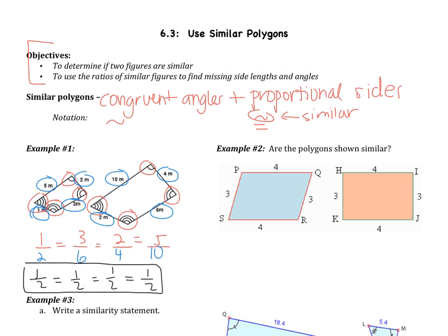Looking at number 2, it says: are the polygons similar? Two things have to be true. One, the angles have to be congruent. And two, the sides have to be proportional.